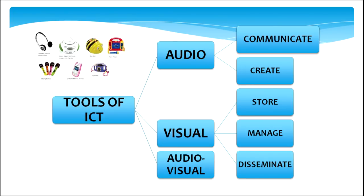Let us have a look at the tools of ICT. Basically, all these technologies are nothing but the tools of ICT. The tools of ICT can be categorized under three main categories: audio, visual, and audio-vision. All these three types of tools are used to communicate, create, store, manage, and disseminate. We have seen how these different tools can be used for each of these functions.